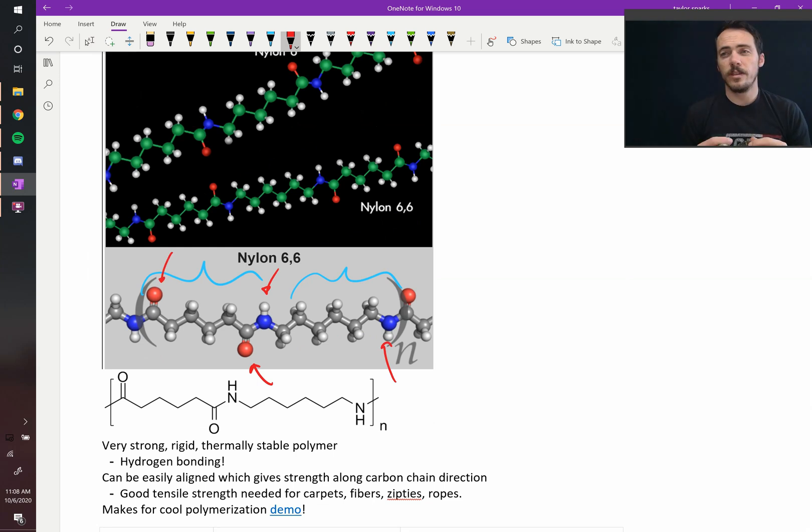What can happen is that these can come together and you get hydrogen bonding because of that. So hydrogen bonding between these chains can make for quite strong polymer.